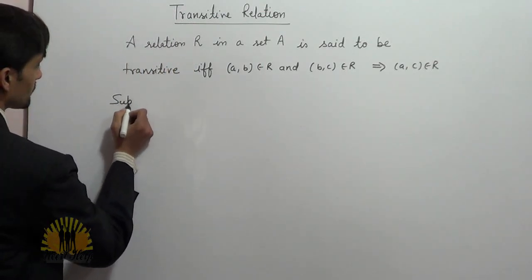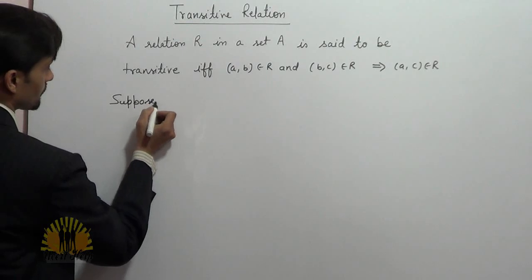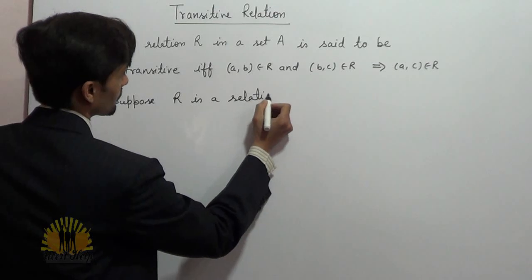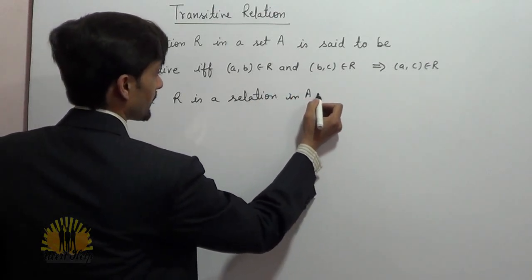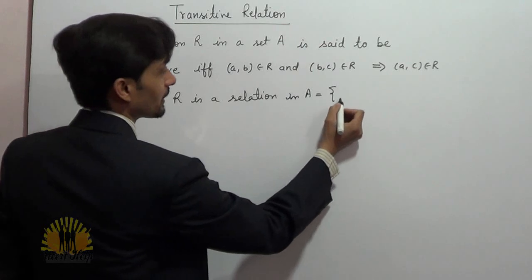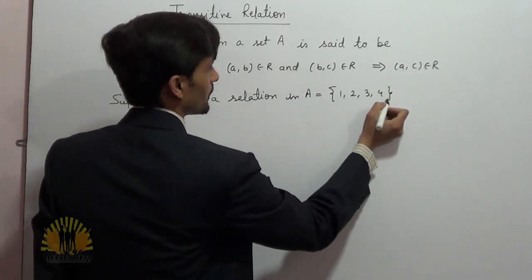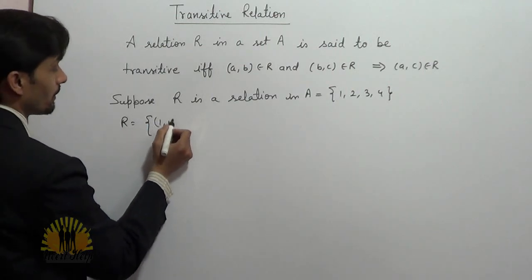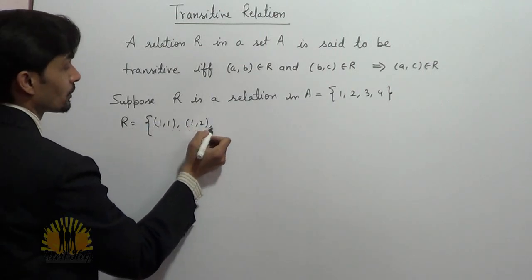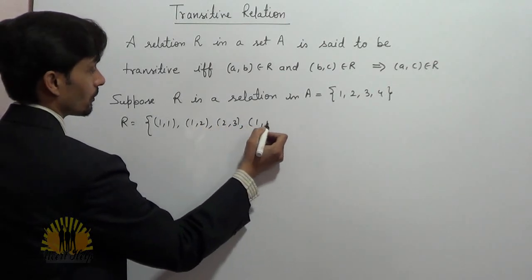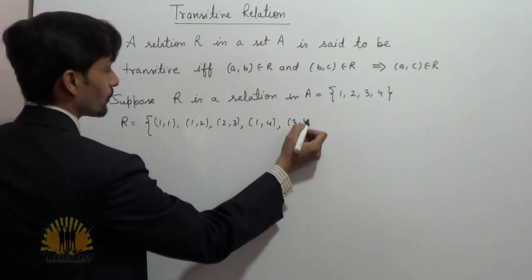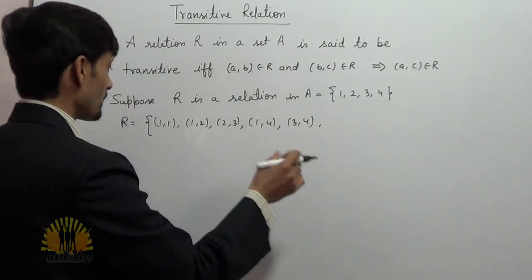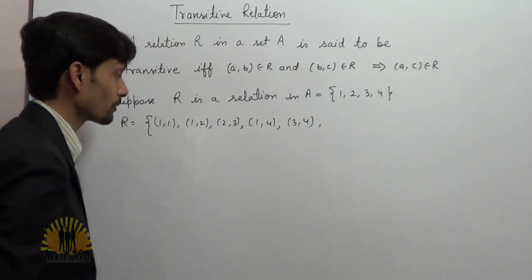Suppose R is a relation in set A, where A contains elements 1, 2, 3, and 4, and R contains the ordered pairs (1,1), (1,2), (2,3), (1,4), and (3,4). Then what ordered pair must come in relation R so that it will become transitive?